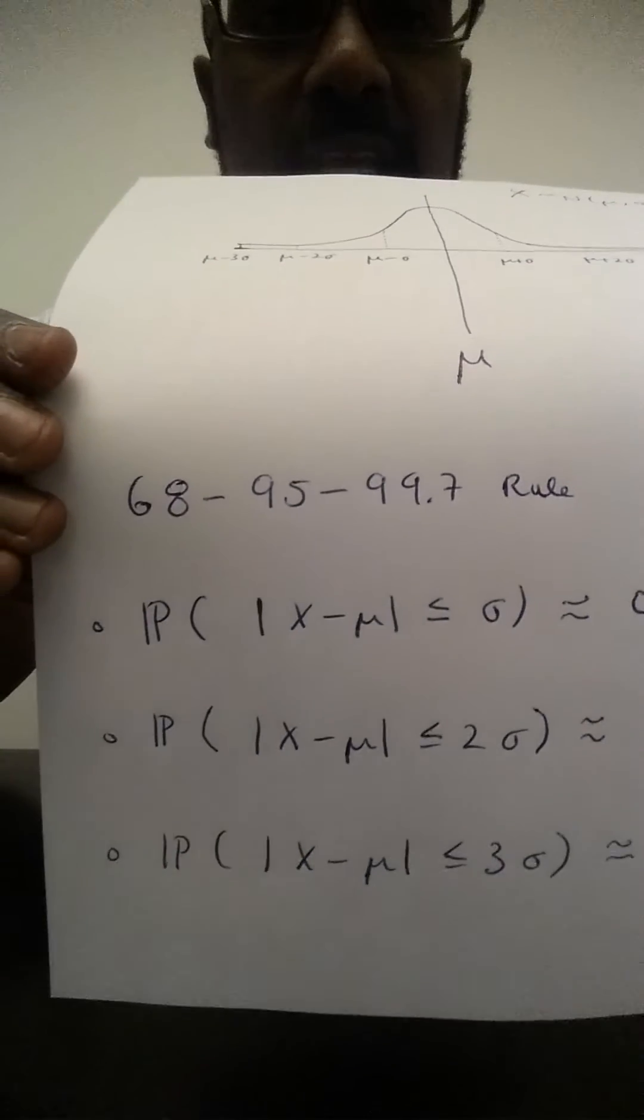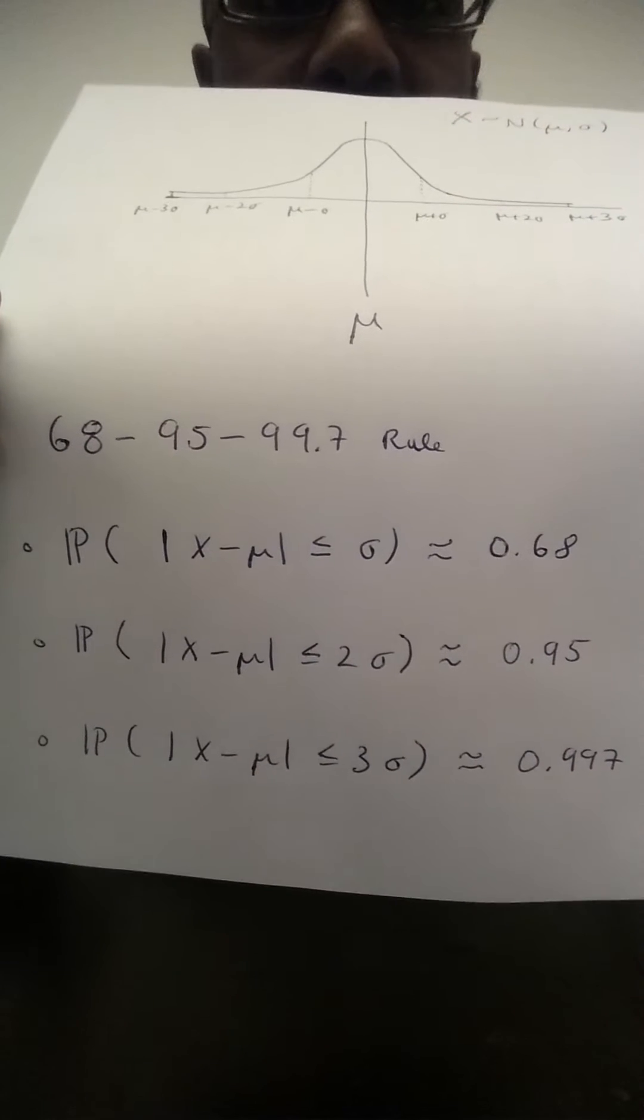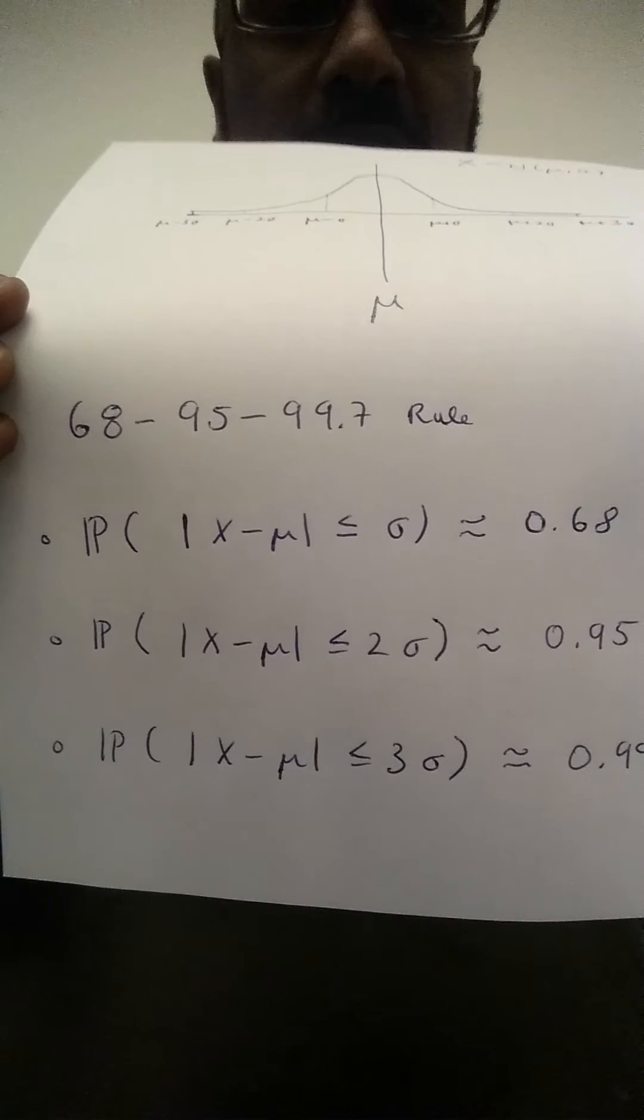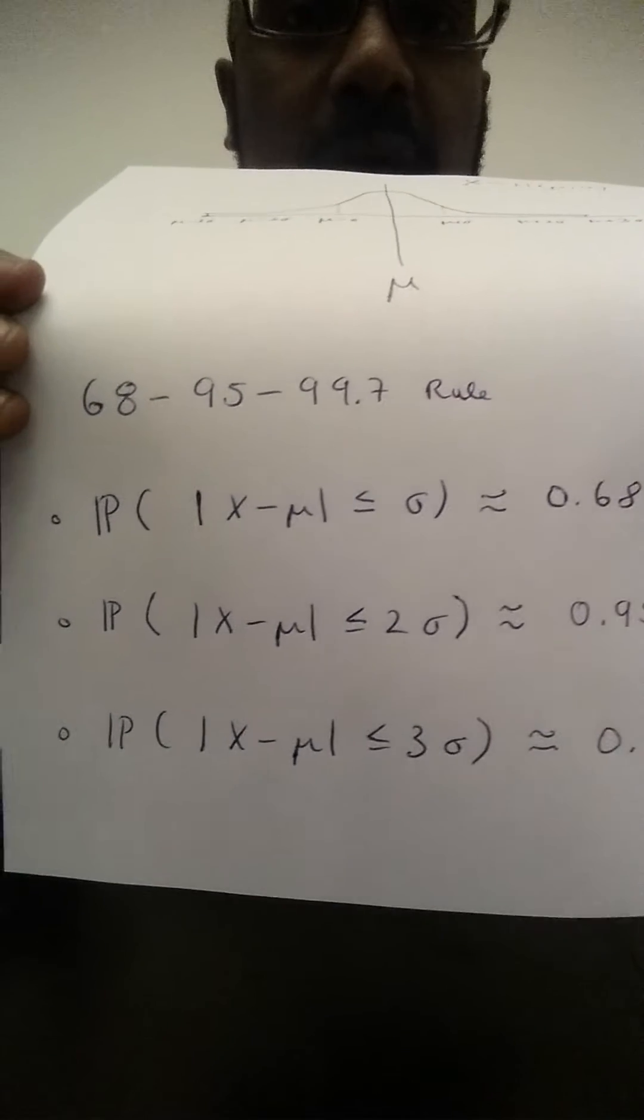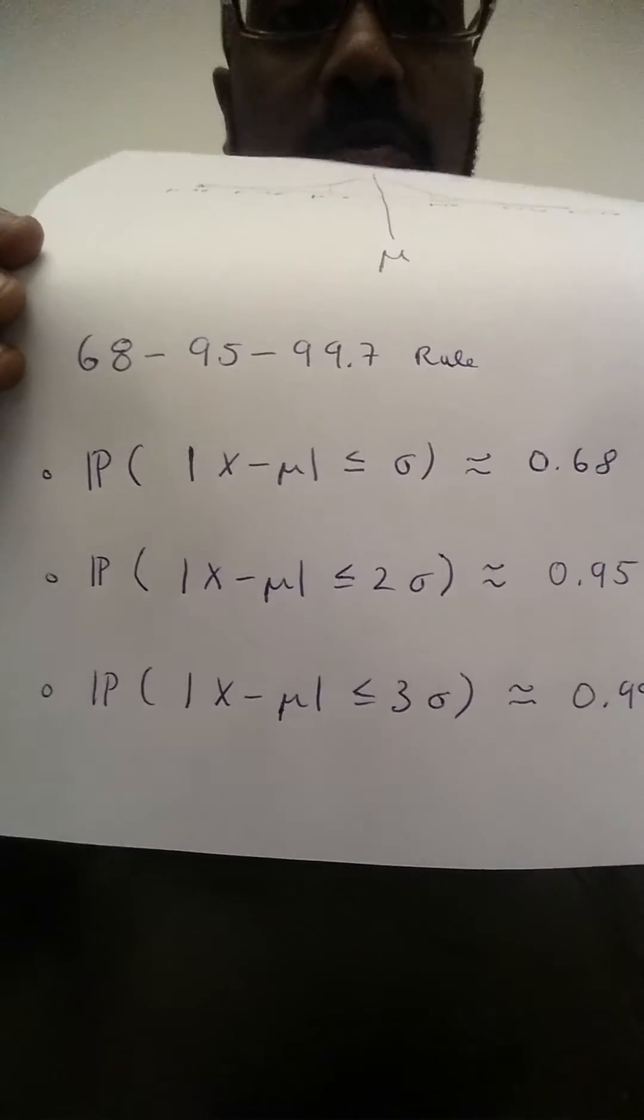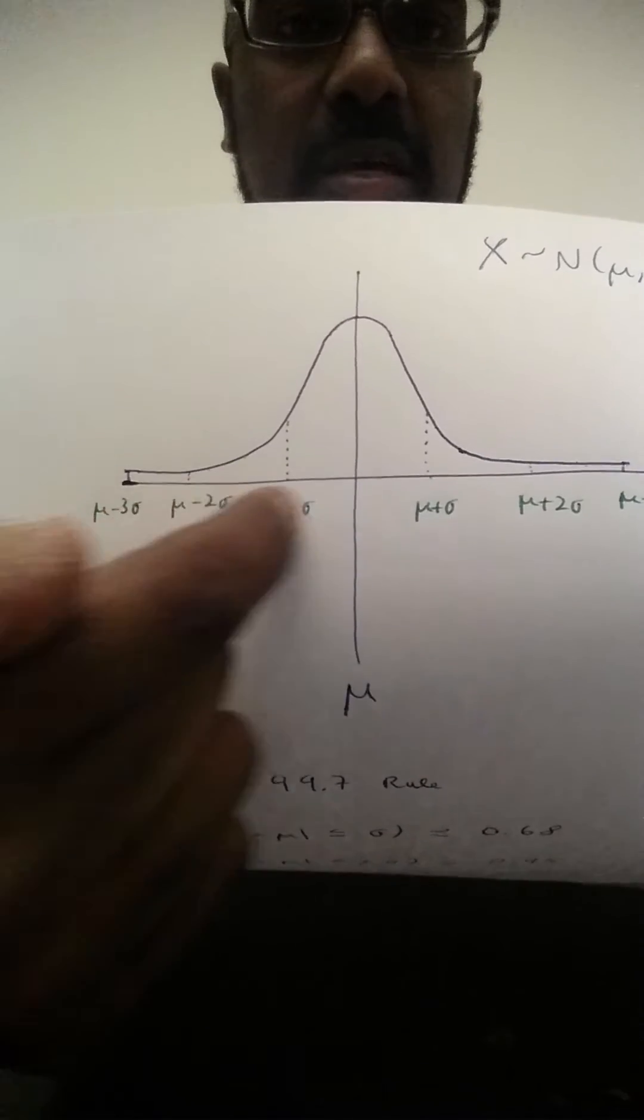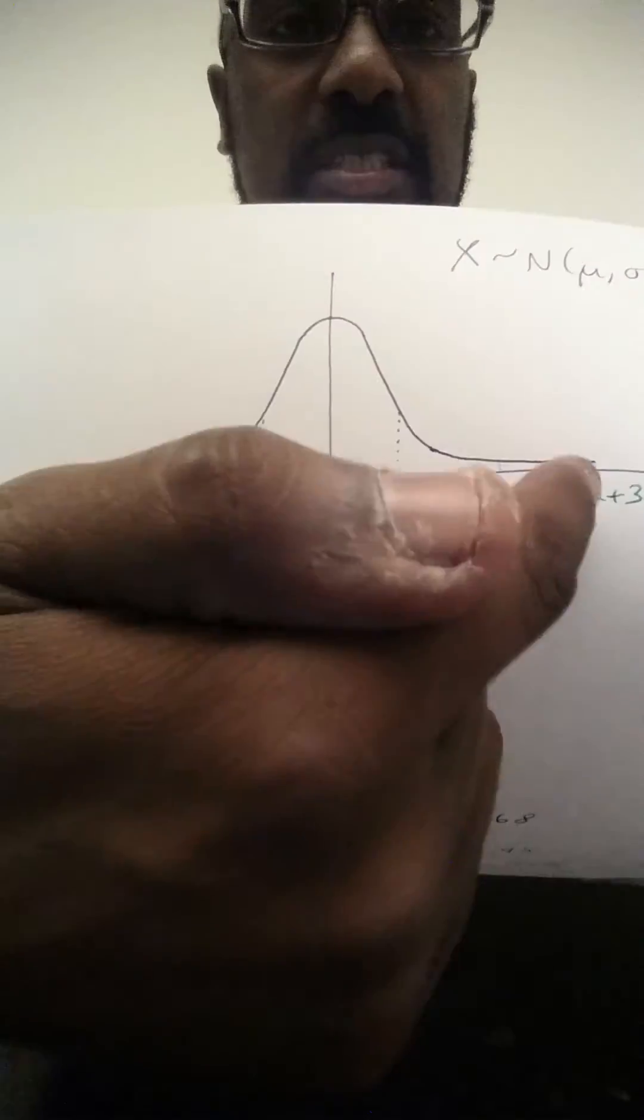It's called the 68-95-99.7 rule, and it says that the probability that X is within one standard deviation of the mean is about 68%, or 0.68. The probability that X is at most two standard deviations from the mean is about 0.95. And the probability that X is within three standard deviations of the mean is roughly 0.997. So the probability being within this part of the distribution is about 68%, within this part two standard deviations is 95%, and within three standard deviations is 99.7.